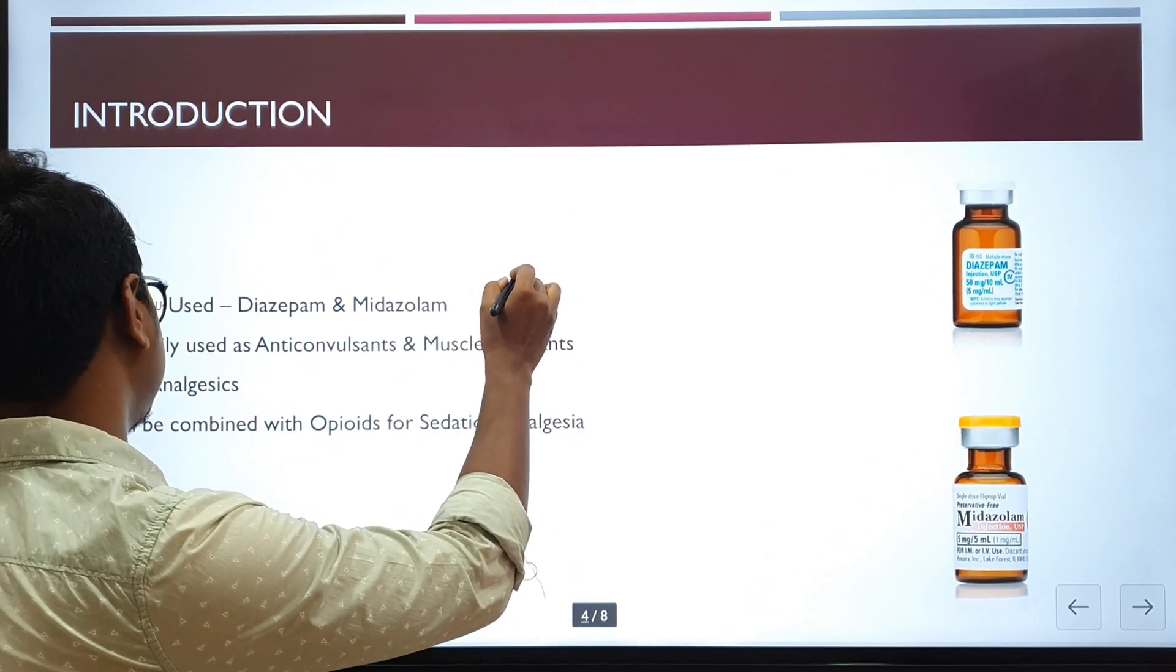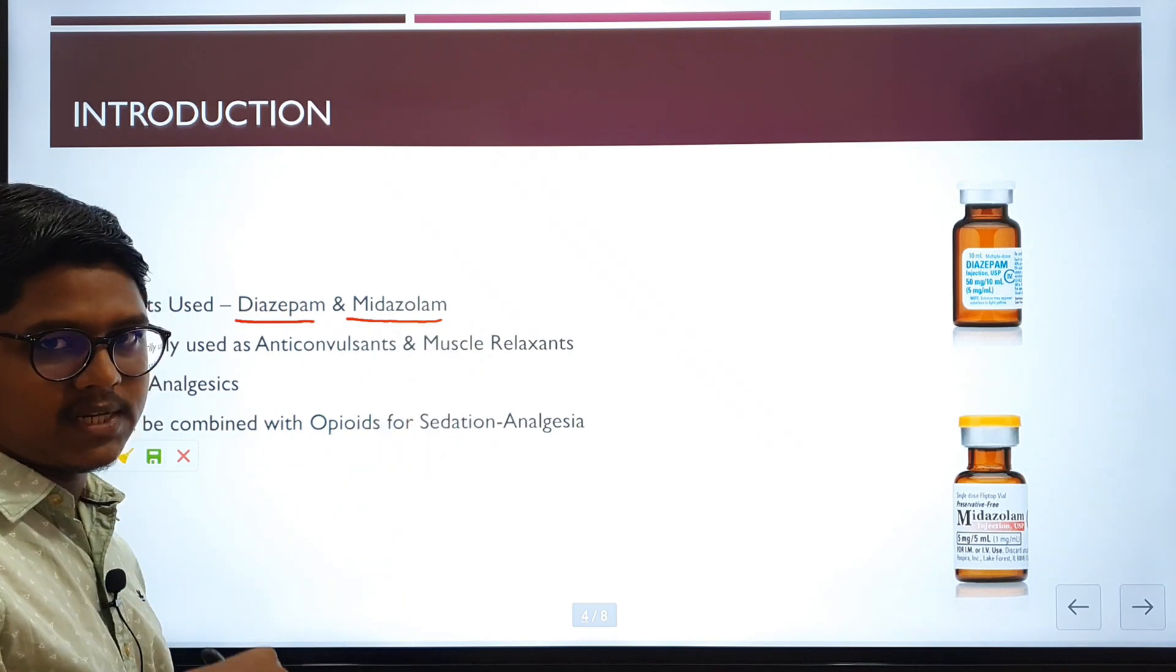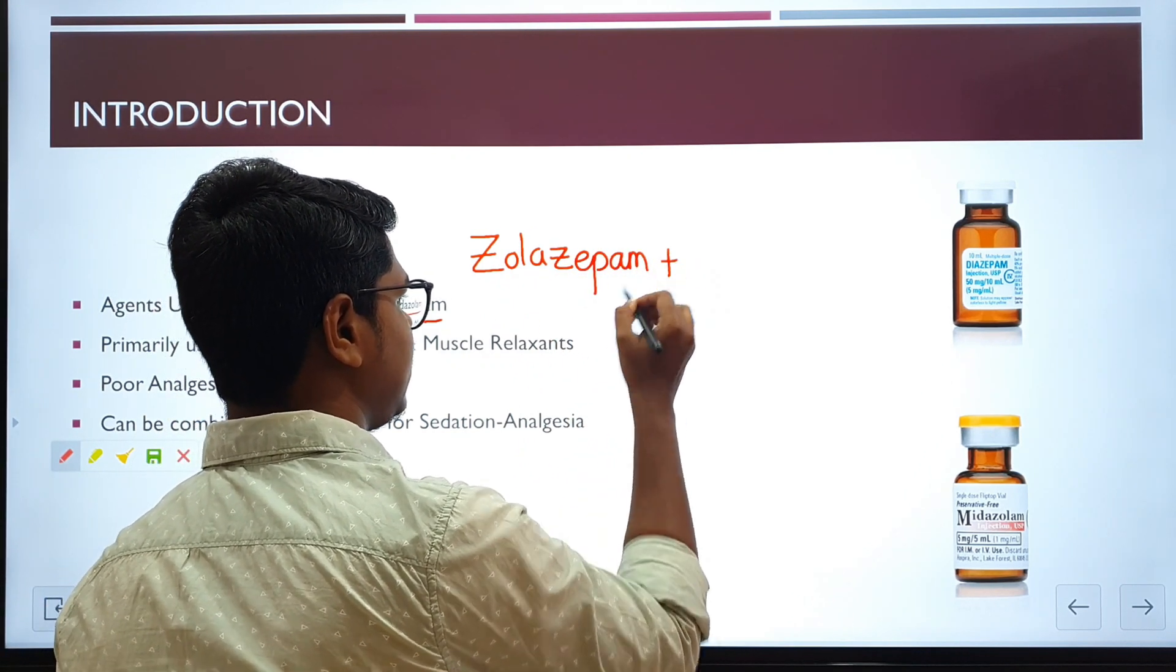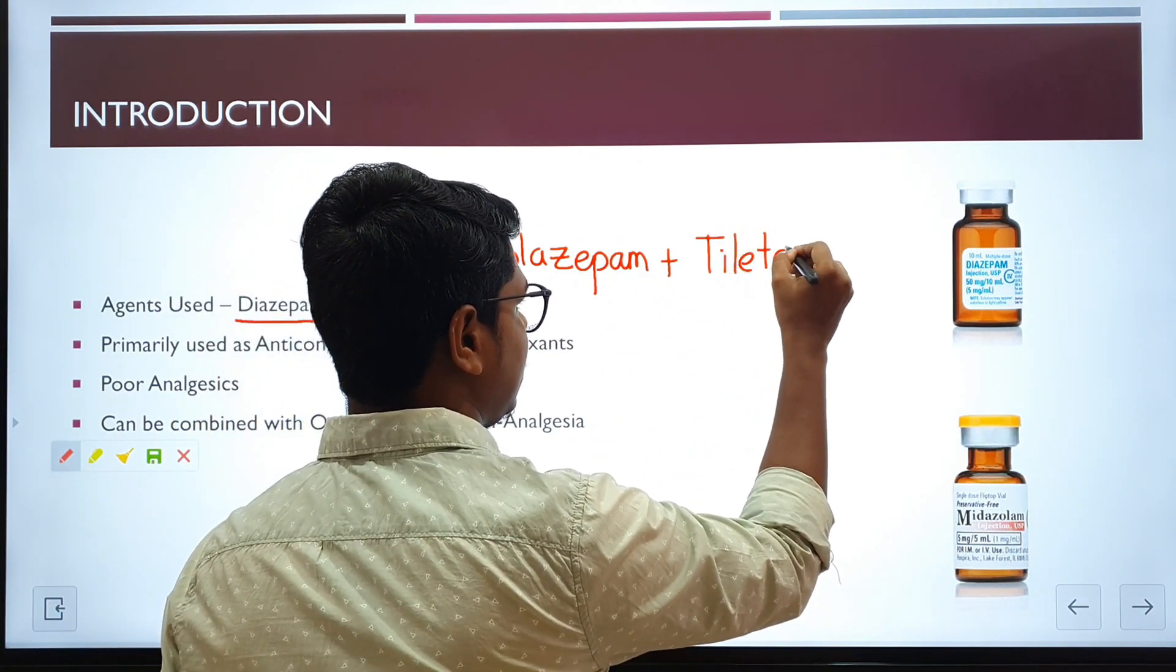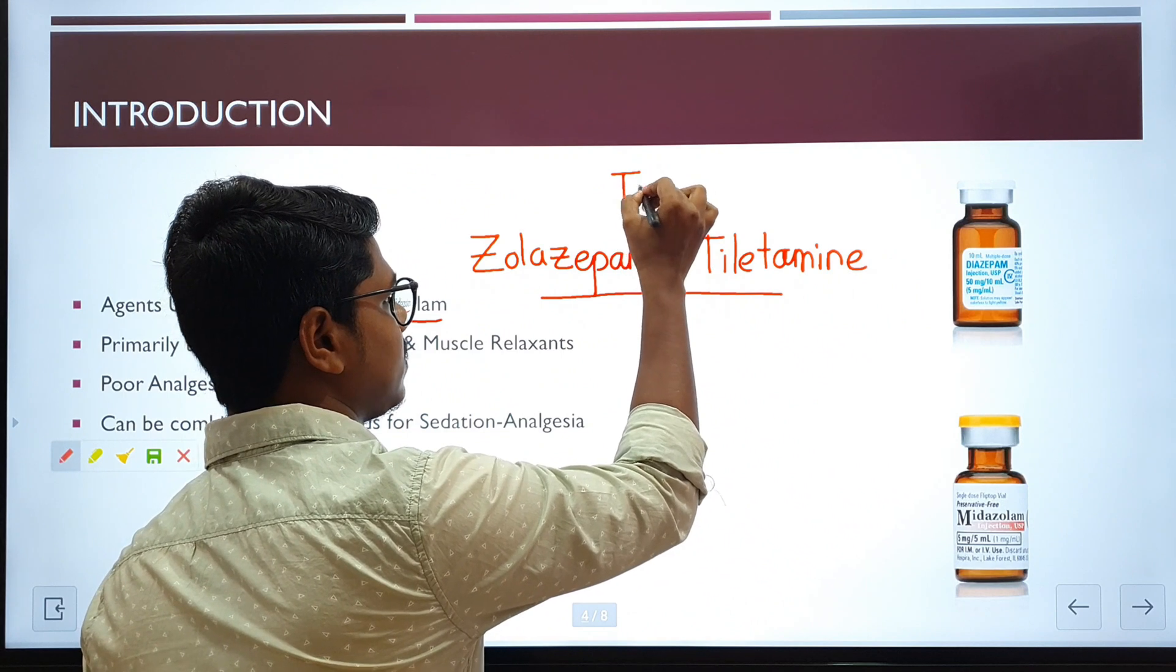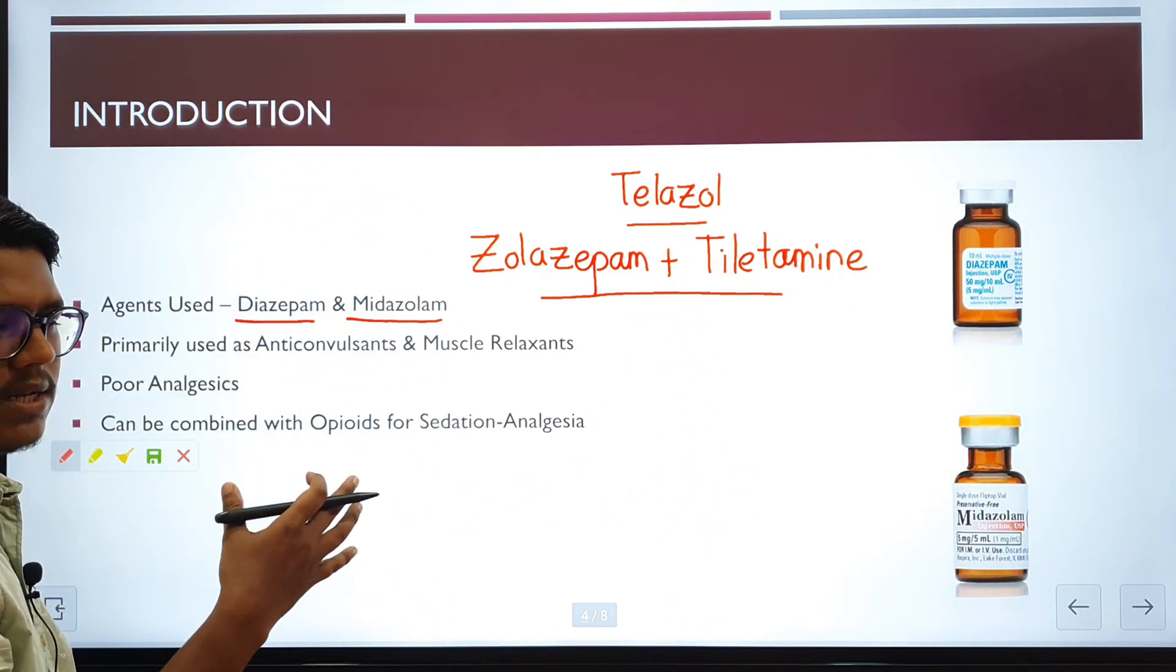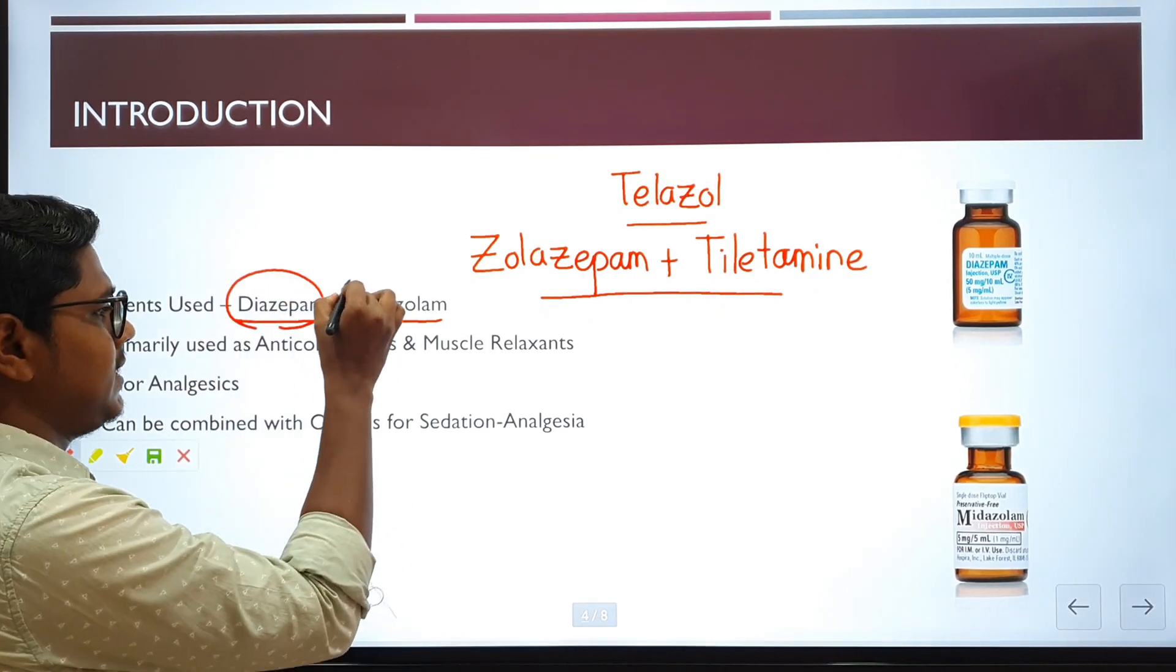Now coming to the main lecture. First, the introduction to Benzodiazepines. The common agents used are diazepam and midazolam. There is another drug used in veterinary medicine, zolazepam. But zolazepam does not come individually. It comes with a dissociative anesthetic. You know about ketamine. There is another one, tiletamine. So it comes in combination with tiletamine. The famous brand name is Telazol. The common agents we will be studying in this class are diazepam and midazolam.